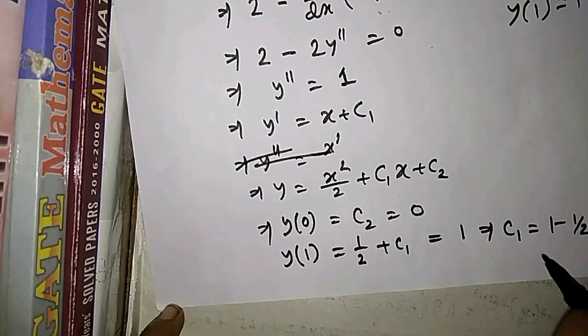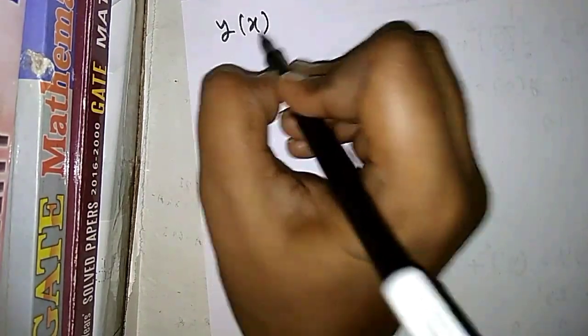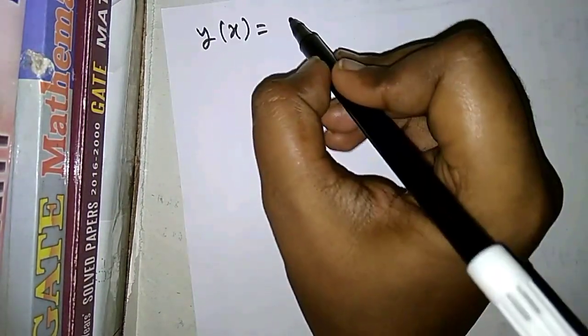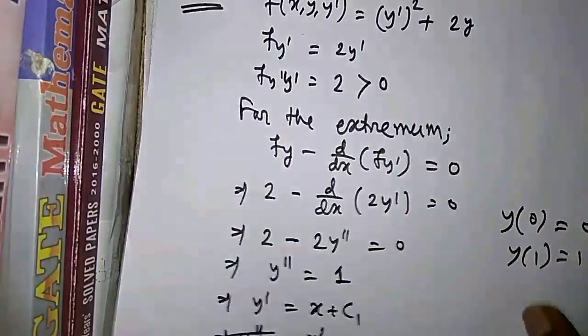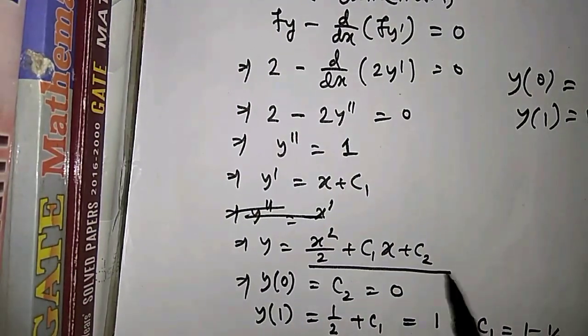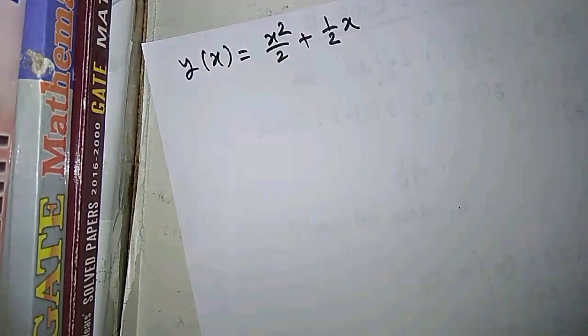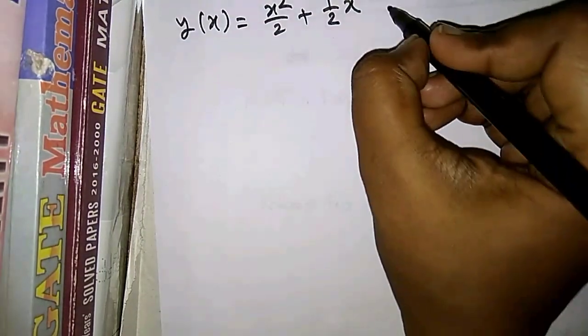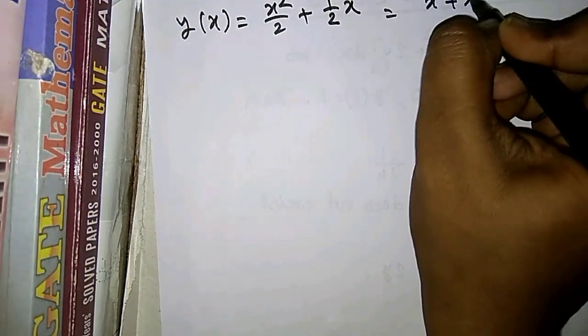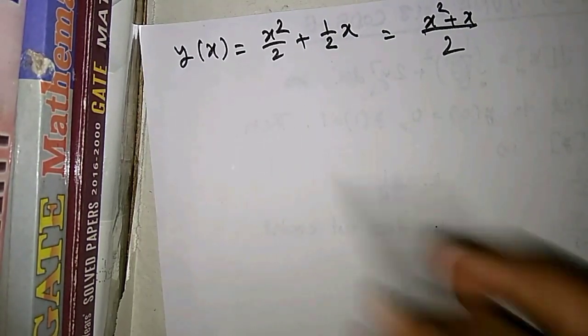Putting x = 1 gives y(1) = 1/2 + c1 = 1, so c1 = 1 - 1/2 = 1/2. Therefore y(x) = x²/2 + (1/2)x + 0, which simplifies to y(x) = (x² + x)/2.